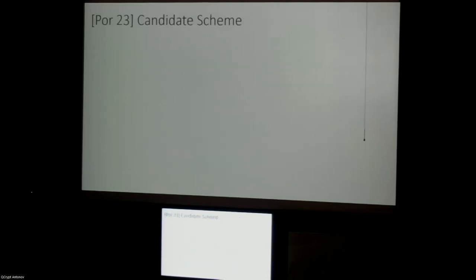For this talk, I want to focus on Alex's candidate scheme from his prior work. If you're familiar with dual Regev encryption, this will look very familiar. In key generation, we sample a random wide matrix A and a secret key, which is a short or zero-one vector in the kernel of A.